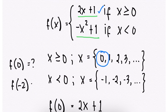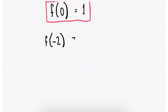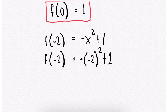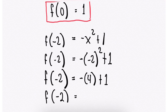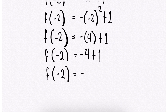What if we have f(−2)? Where does −2 fall? Negative 2 falls under x < 0. So we are going to use f(x) = −x² + 1. Replace every x with −2. So f(−2) = −(−2)² + 1. f(−2) = −(4) + 1. f(−2) = −4 + 1 = −3. Therefore, f(−2) = −3.